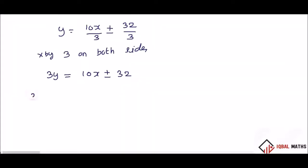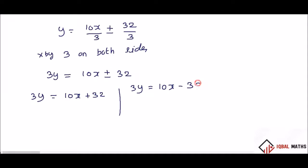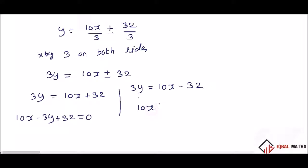Let's separate. First one: 3y is equal to 10x plus 32, which gives 10x minus 3y plus 32 equal to 0. Second one: 3y is equal to 10x minus 32, which gives 10x minus 3y minus 32 equal to 0. This is the required equation of tangents.